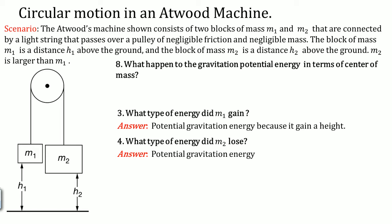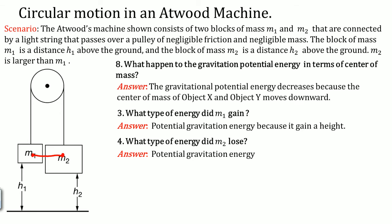What happens to the gravitational potential energy in terms of the center of mass? The center of mass is defined by the mass and the distance between them. The gravitational potential energy decreases because the center of mass of M1 and M2 moves downward. This makes sense because M2 moves down and M2 is heavier, so the center of mass moves down.